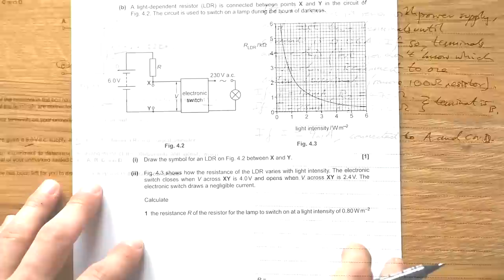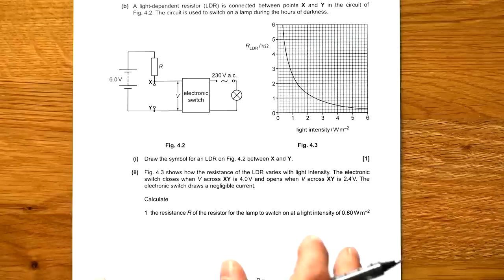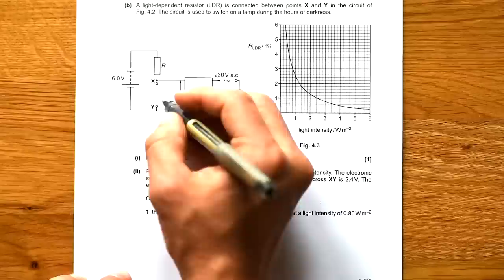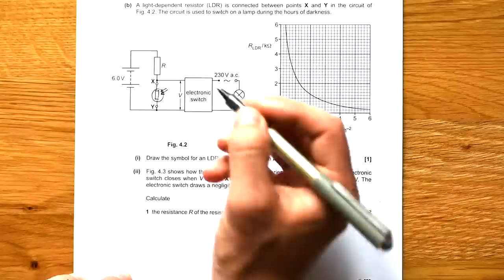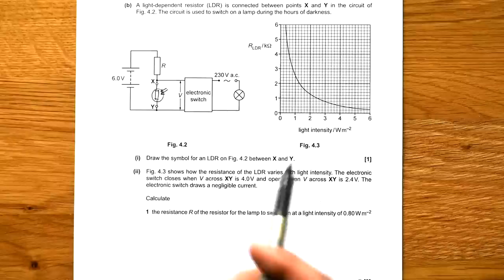Part B: Light dependent resistor is connected between points X and Y in the circuit. The circuit is used to switch on a lamp during the hours of darkness. Sounds very ominous. Draw the symbol for an LDR on figure 4.2 between X and Y. It's just a resistor with two little arrows going in. Sometimes you might see a circle around it. You don't have to have the circle.